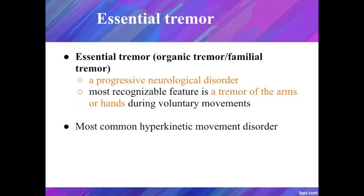The patient states: 'People need to know that we're all one and we're all together. We're just the same as everyone else, basically.' Essential tremor, also known as organic tremor or familial tremor, is a progressive neurological disorder. The most recognizable feature is a tremor of the arm or hands that is apparent during voluntary movements, such as eating and writing. It is also the most common hyperkinetic movement disorder.